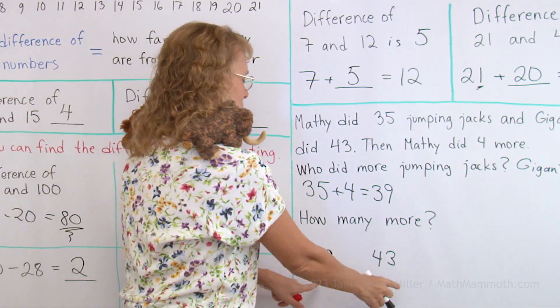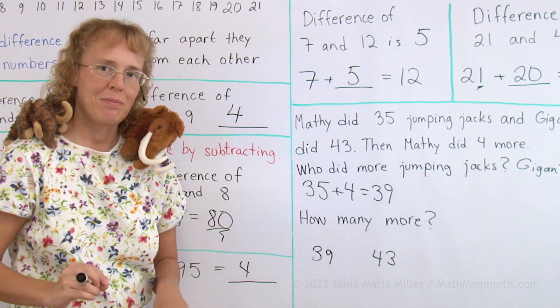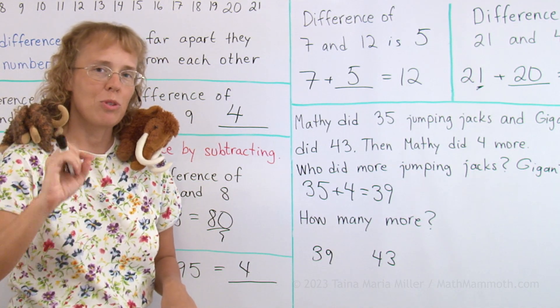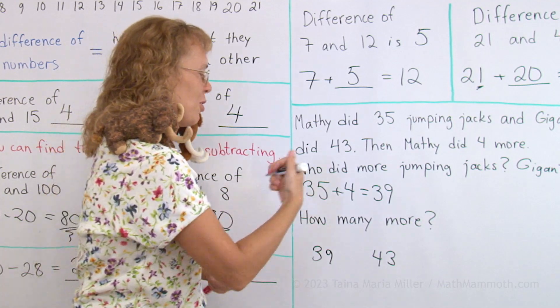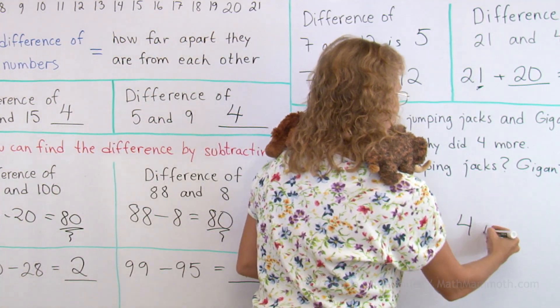So how many steps apart are these two numbers? 39, you jump to 40, 41, 42, 43. Four steps apart, or 4 more is the answer.